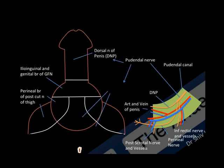Another schematic diagram shows that the anterior part of the scrotum is supplied by the ilio-inguinal and the genital branch of the genitofemoral nerve, while the posterior part is supplied by the posterior scrotal nerves, also known as the long scrotal nerves.